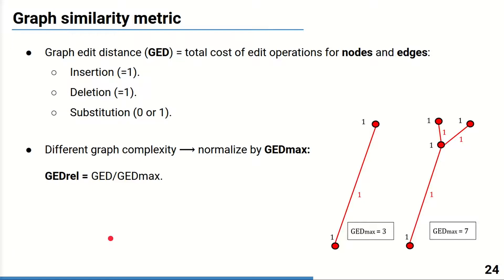As the complexity of the graphs may vary a lot, we propose to normalize the metric with a so-called GEDmax, which corresponds to the total mismatch for a given graph. And the GEDmax is calculated as a sum of all edge and nodes costs.